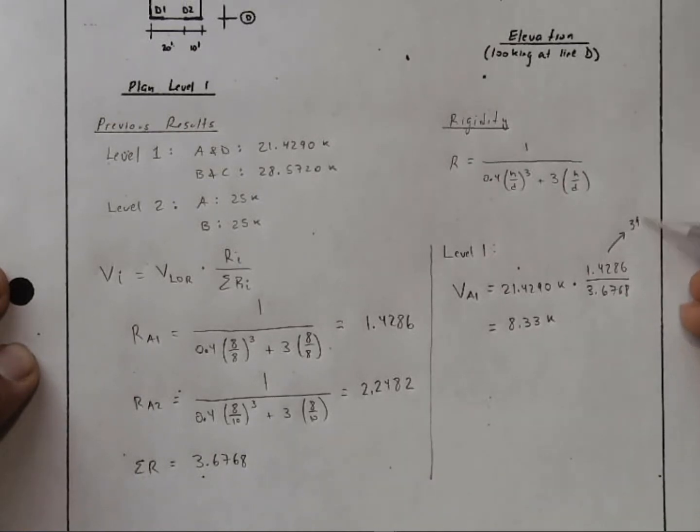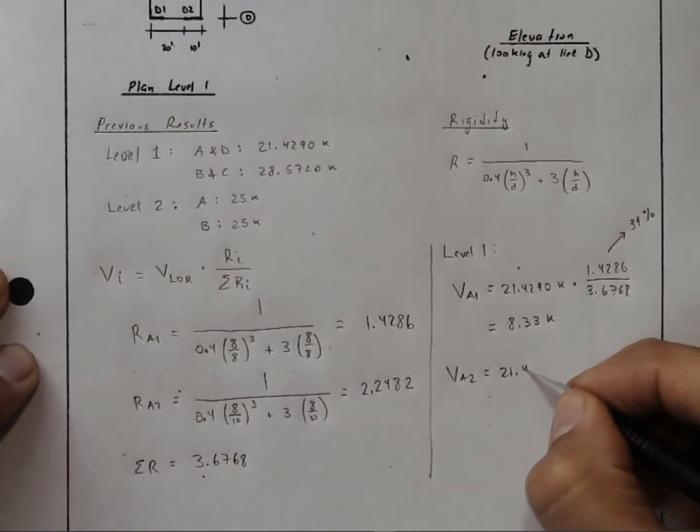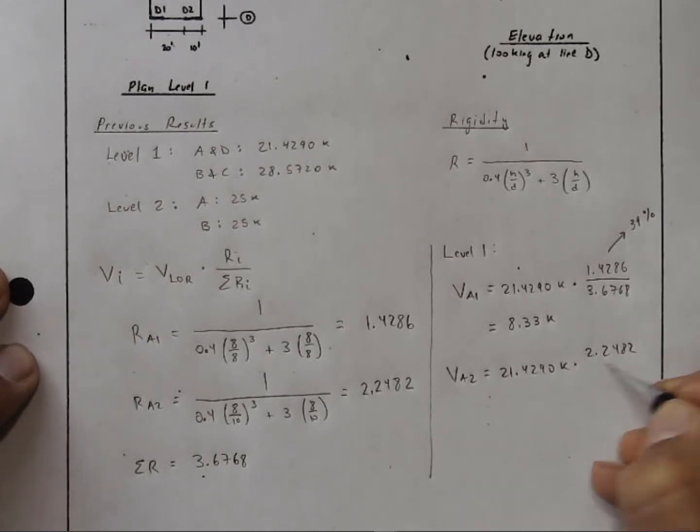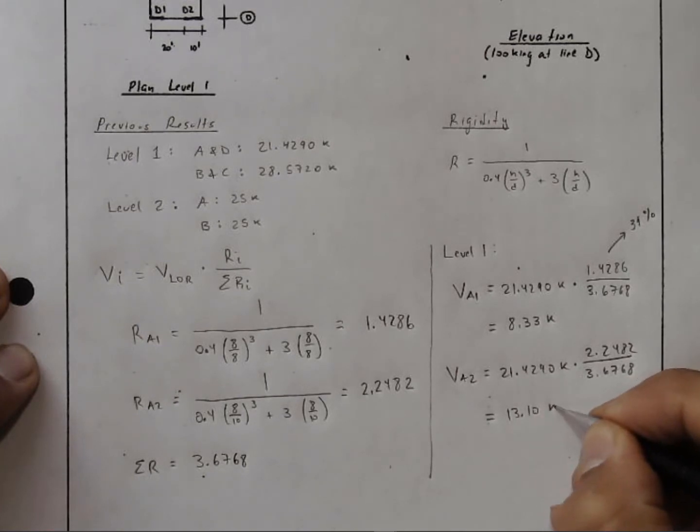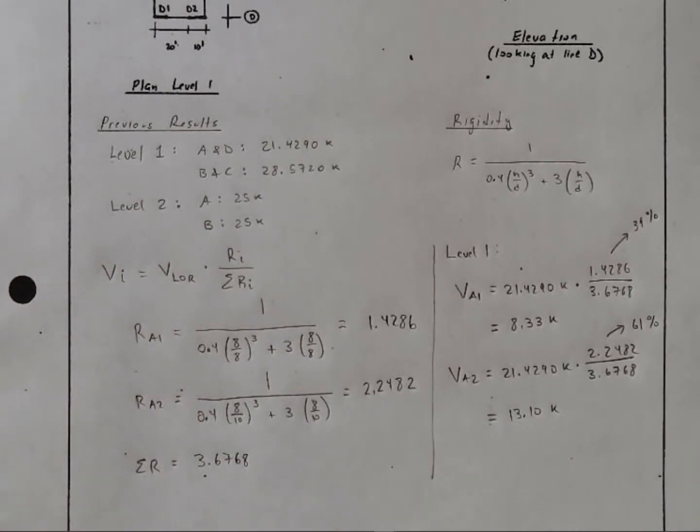This by the way is 39%. We can calculate shear along wall A2. Well, we still have the same force of 21.4290 that we're dividing. But now we're using this rigidity of 2.2482 divided by the total. Again, 3.6768. And this evaluates out to 13.10 kips. This is 61%. We can check by the way. 13 plus 8 is 21, 33 plus 10 is 43. So 21.43 is what we have here. So we can confirm that these two individual forces indeed add up to the total.